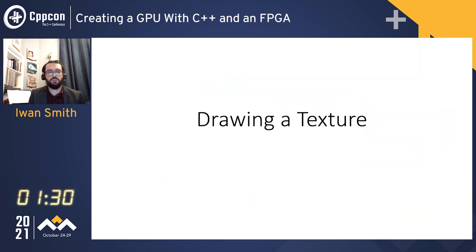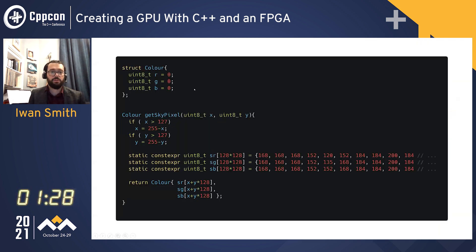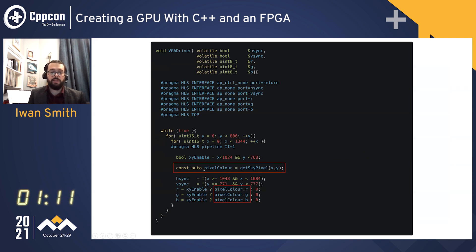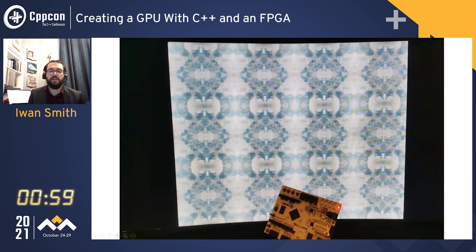But let's move on and draw a texture. I can define a struct color with red, green and blue components. I can then create a function, getSkyPixel, which will return a color for specified coordinates. All this does is look up the corresponding pixel in these massive arrays of RGB data. So we go back to our initial code, add a line to set the pixel color to the corresponding coordinates on the display, and instead of outputting some equations, we output the corresponding colors. Run this through the tool, and then we have this repeating tiled sky texture.